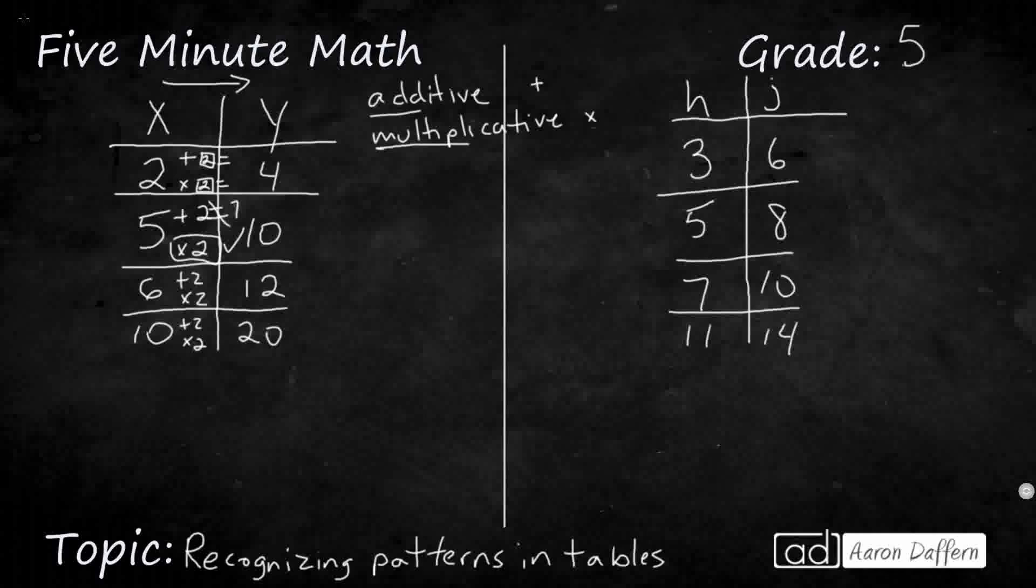6 plus 2 doesn't work, right? That equals 8. But 6 times 2, that equals 12. All right, and we see that the plus 2 is not working for us. That should be 12. But instead, we need the times 2. All right, so we can say it's a multiplicative relationship.